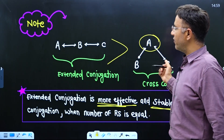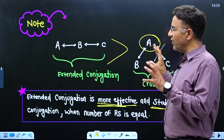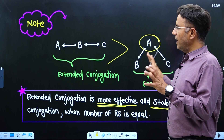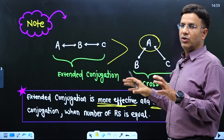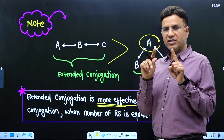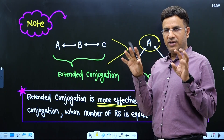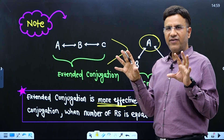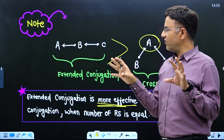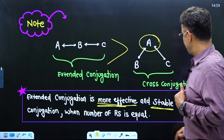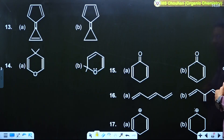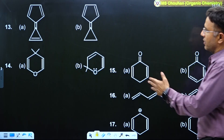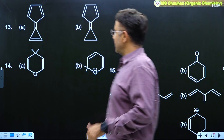This concept of extended and cross conjugation is applicable when there are two different molecules and the number of resonance structures (RS) must be the same. The molecules must be separate and different, and the number of RS must be equal. Now let us explain with the help of examples.